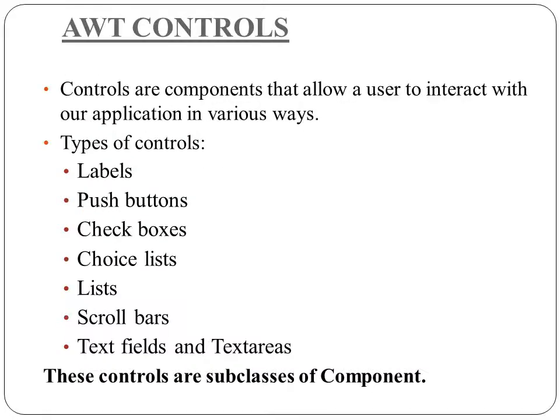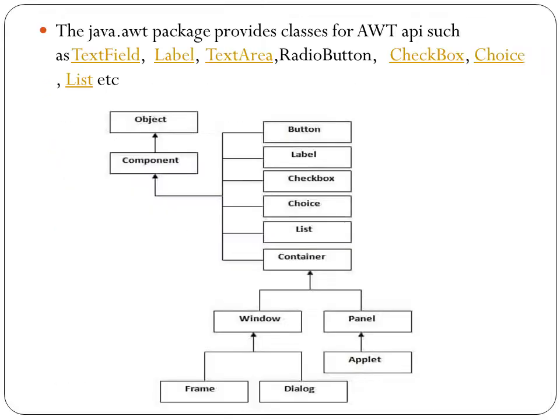AWT means Abstract Window Toolkit. It is an API which provides a graphical user interface, and this API provides various controls like label, button, checkbox, choice, list, scrollbar, text field, and text area. Controls are components that allow a user to interact with the application, and all the controls are subclasses of the component class. All these controls should be added to container windows.